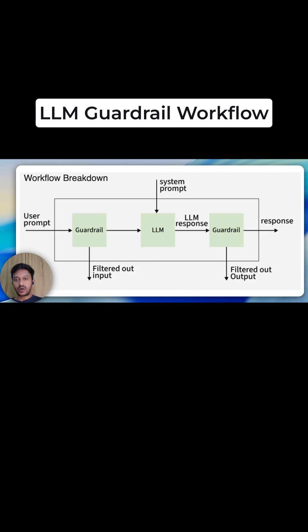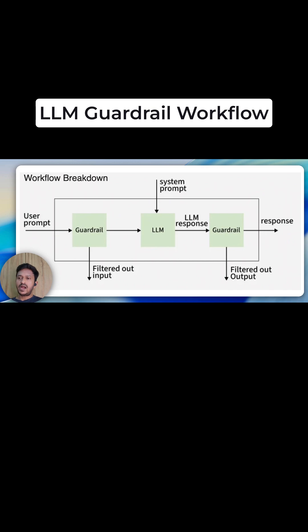It all starts with the user prompt, the user query. Before the user query reaches the LLM, there is a guardrail — it checks for the request: if the request is harmful, if the request is allowed under the company policy, or is sensitive data being sent. So it checks for all this toxicity, and if it fails, the request is blocked and the response will not be generated.